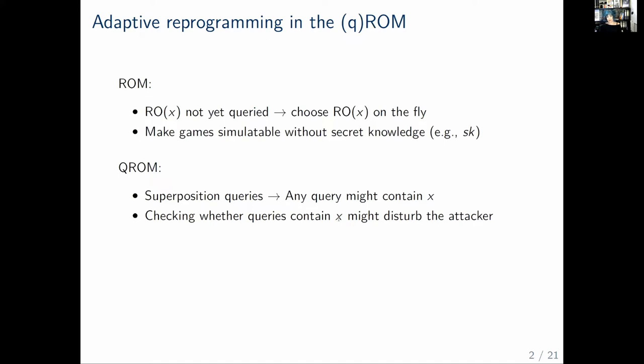This in particular means that a reduction could pick the value in a way that's helpful to the reduction to simulate a particular security game without any secret knowledge like, for example, a secret key. It only has to make sure that the value is uniform and consistent with the rest of the view of the attacker.